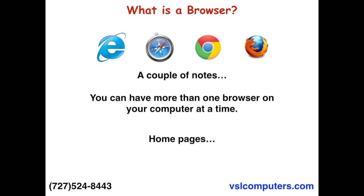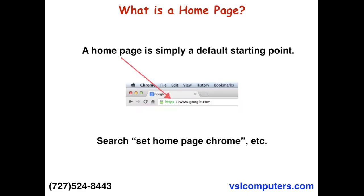The next thing we'll discuss is home pages, which also seem to be a source of confusion. A home page is simply a default starting point — when your browser opens up, whether it's Chrome or Internet Explorer, it wants to show you a web page. Imagine getting into your car and every time you started it up, it took you straight to Publix — we'd call that your default starting point. So when somebody says 'I used to have Google.com, now I have Chrome,' that's like saying 'I used to go to Publix, now I have a Toyota' — Toyota is a vehicle, you can go anywhere with it.